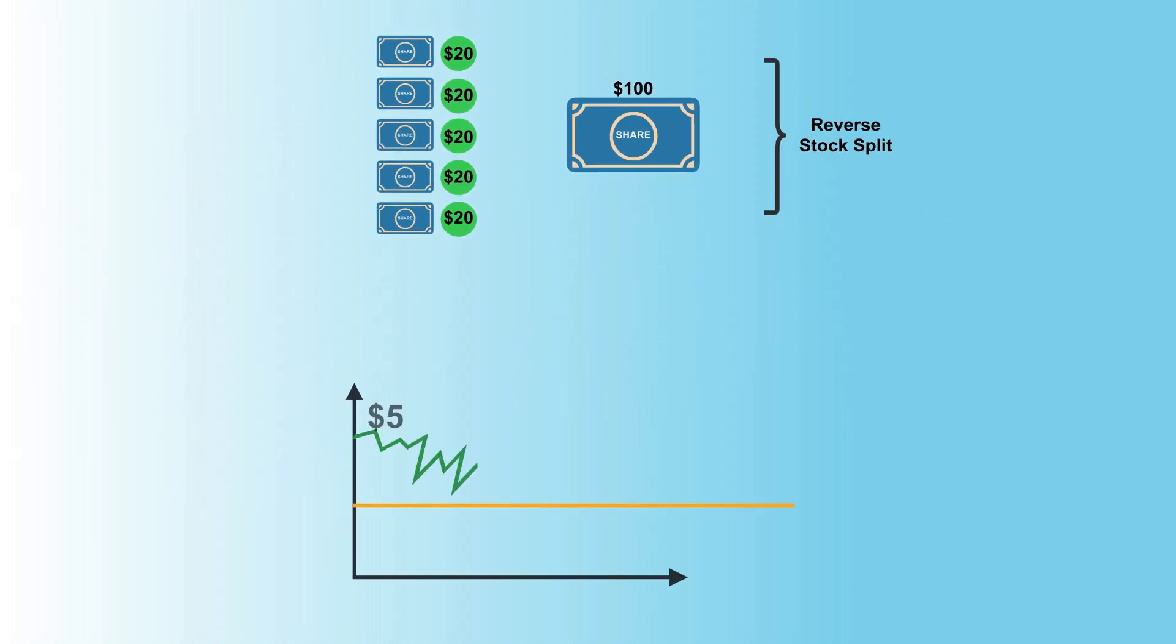When the shares drop below the minimum price needed to meet exchange listing requirements, businesses frequently decide to implement a reverse stock split. Stocks worth less than the exchange minimum run the risk of being delisted, preventing them from trading on the exchange.